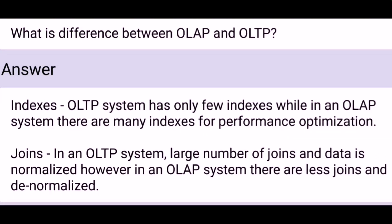What is the difference between OLAP and OLTP? In terms of indexes, an OLTP system has only a few indexes, while in an OLAP system there are many indexes for performance optimization. In an OLTP system, there are a large number of joins and data is normalized. However, in an OLAP system there are fewer joins and data is denormalized.